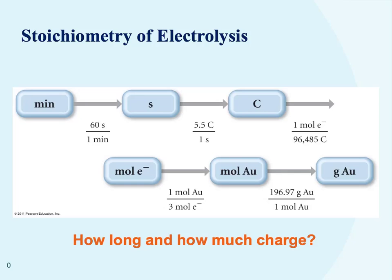Now what we can look at is the stoichiometry of electrolysis. How long do we need to do it? How much current? All of these things can be calculated, and so what we look at is basically how long we're going to do it and how much charge we need to supply for this reaction to occur.